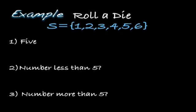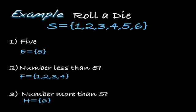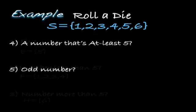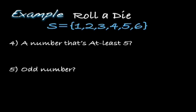The event of rolling a specific number has one outcome associated with it, so we can determine the probability. For a number less than five, a number more than five, a number at least five — two outcomes are associated with being at least five — and an odd number, there are three outcomes associated with being odd. We can determine the probability for each.